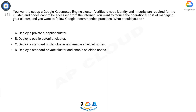Question 245: You want to set up a Google Kubernetes Engine cluster. Verifiable node identity and integrity are required for the cluster, and nodes cannot be accessed from the internet. You want to reduce the operational cost of managing your cluster and follow Google recommended practices. What should you do? A) Deploy a private Autopilot cluster. B) Deploy a public Autopilot cluster. C) Deploy a standard public cluster and enable Shielded Nodes. D) Deploy a standard private cluster and enable Shielded Nodes.